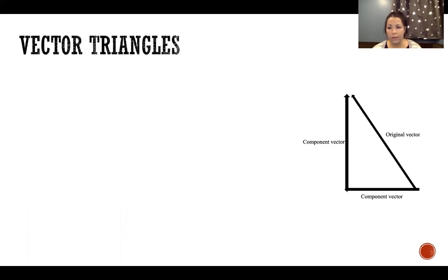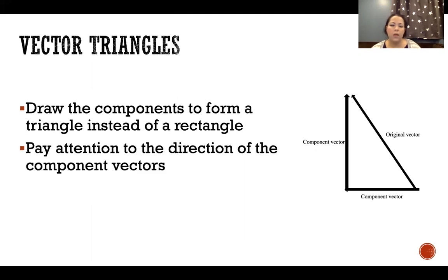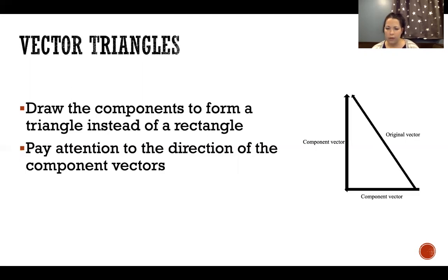A vector triangle is the same thing except instead of making a parallelogram, you put your component vector on the other side of the original vector, forming a triangle instead. Pay attention to the direction of your vectors — in this case they're not all originating at the same point. One component originates at the same point as the original vector, but the other component does not, so make sure your arrow is pointing in the same direction as the original vector.